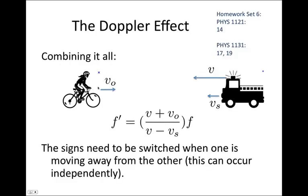We can combine these two situations: if both the observer and the source are moving, the observed frequency f' = (v + v₀)/(v − v_s) × f, where v₀ is the velocity of the observer and v_s is the velocity of the source. These signs are for when the two are moving towards each other; if the observer moves away the numerator sign becomes negative, and if the source moves away the denominator sign becomes positive. To practice using this equation, try homework set 6: for FIS 1121 students, question 14; for FIS 1131 students, questions 17 and 19.